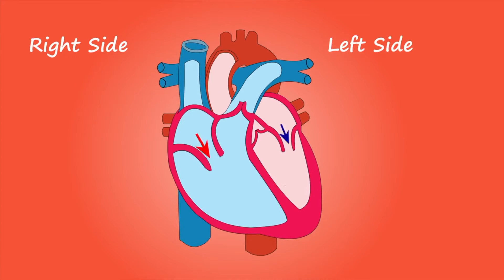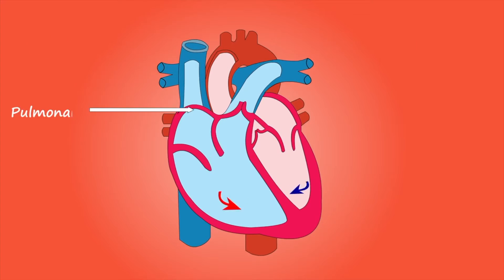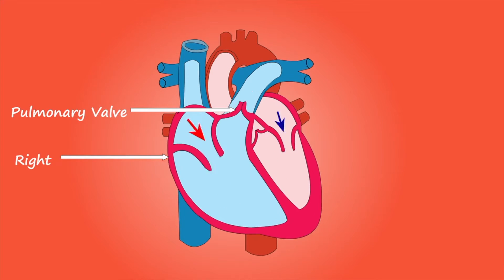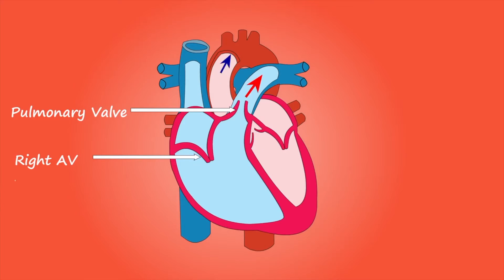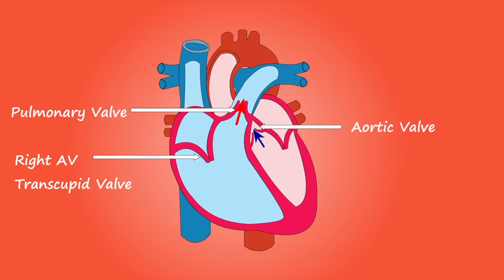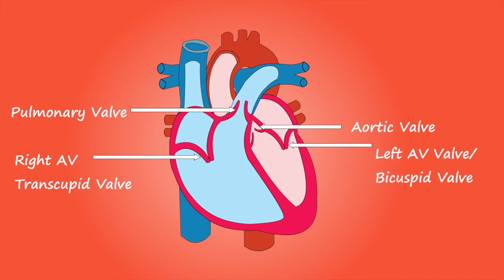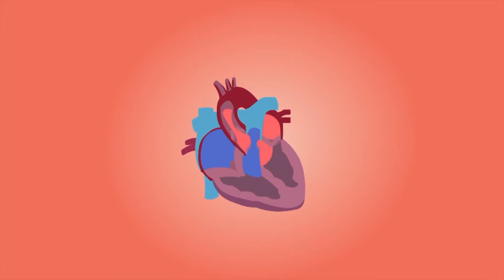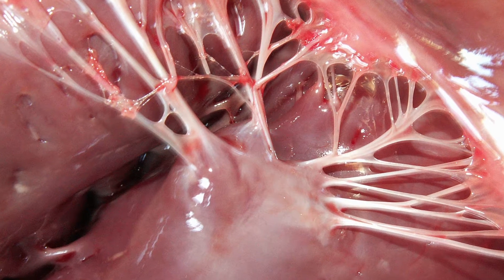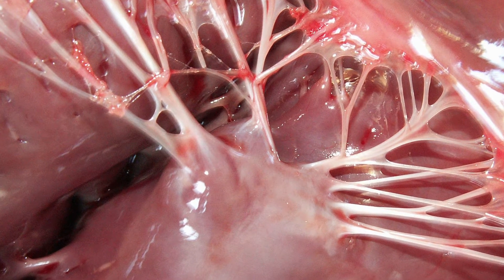The heart consists of four chambers: the right and left atria above the right and left ventricles. The right atrium links to the right ventricle by the tricuspid valve, which prevents the backflow of blood into the atrium above. The left atrium links to the left ventricle by the bicuspid valve, or the mitral valve, which also prevents backflow into the atrium above. The chordae tendinae attach each ventricle to its atrioventricular valve.